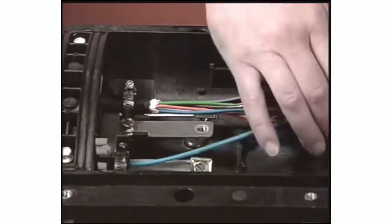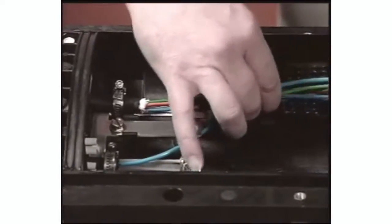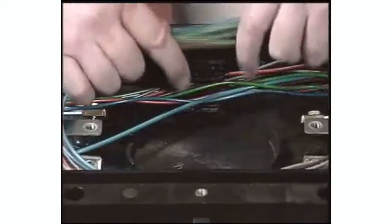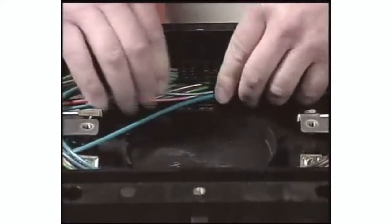Route the buffer tubes around the base of the closure. Secure them to the hold-down clips with the provided cable ties.